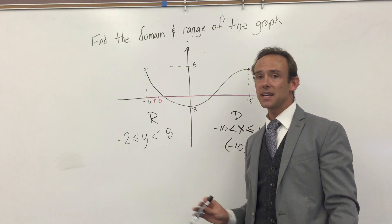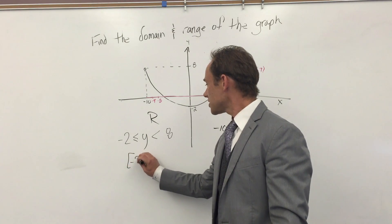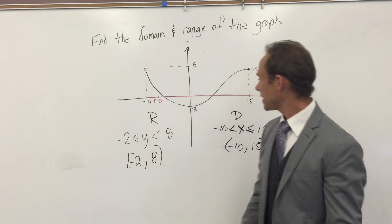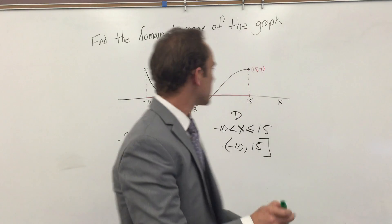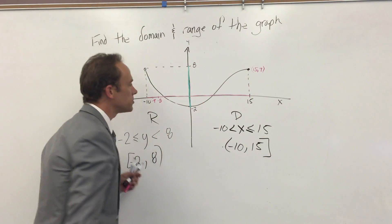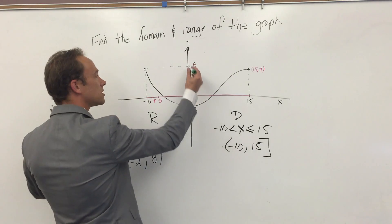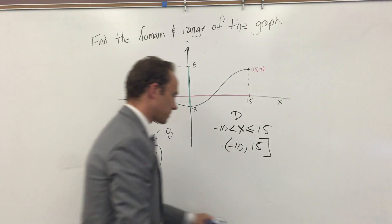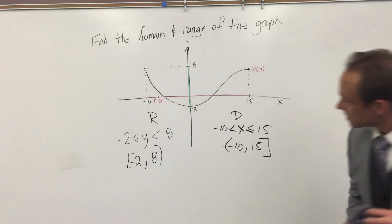Now it has to be less than 8. We see that open circle, so it can't actually be 8 — I'll say less than 8, not less than or equal to 8. So that is our range, and that is our domain. If you want, trace along the y-axis wherever the graph has a value — that trace will tell you the range.